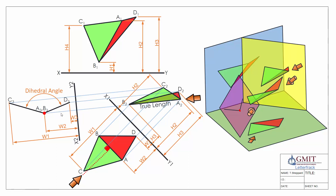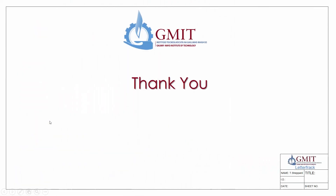These three scenarios cover pretty much all the cases you're likely to encounter. If you have a good understanding of what you're trying to do — identifying the line of intersection, finding its true length, and then getting a point view of it — the points C and D are simply carried along with the projection, and that will give you your dihedral angle. That pretty much covers the dihedral angle. Thank you very much and keep tuning in to the videos for more information.